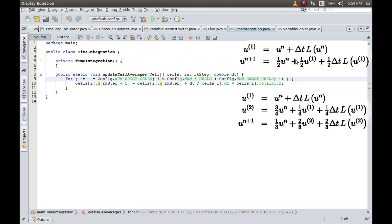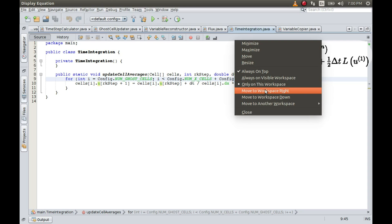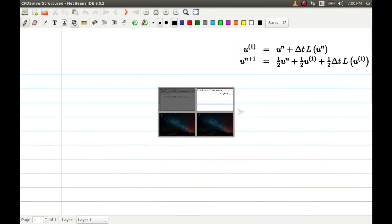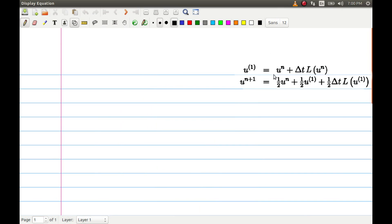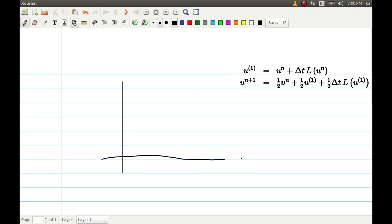Before we continue, let's quickly understand the two-step Runge-Kutta method and implement it. Let me minimize this, I'll put this on a different workspace. Let me try to demonstrate this method here. Let's look at what is happening. Let me draw a vertical axis and a horizontal axis.